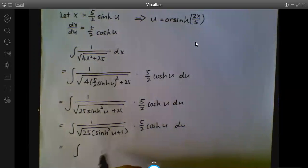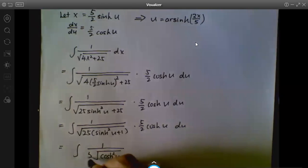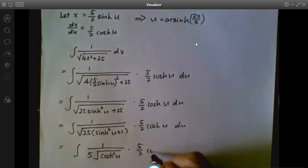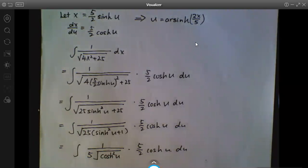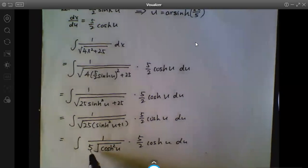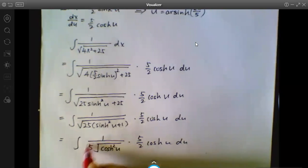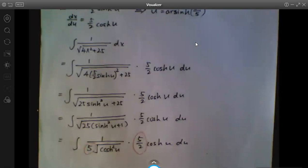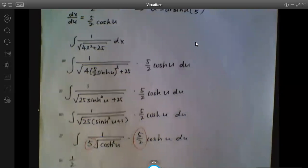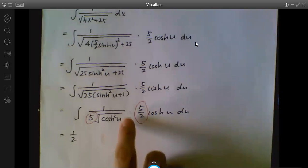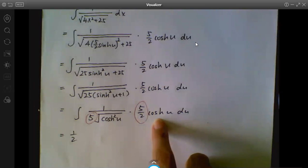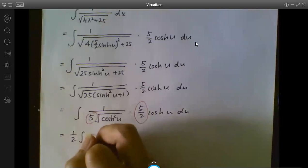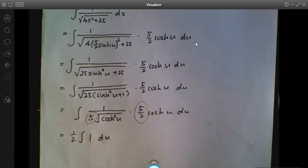And then you use the identity to change this to cosh. This part changes to cosh²(u). And then I will take the square root of 25 to give us 5. I will copy back this stuff. So 5 and 5/2 will end up with 1/2. Cosh squared square root is cosh, multiply by cosh on top will give us 1 again.